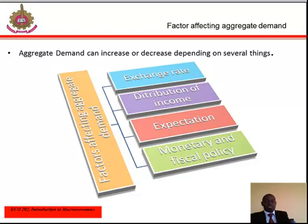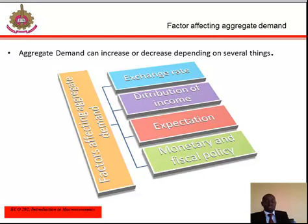Another factor is expectations. Consumers tend to have certain expectations about the future of the economy and adjust their spending accordingly. Another factor is monetary and fiscal policy. The government has some ability to impact aggregate demand — they can spend money or increase taxes in order to influence how consumers spend or save. An expansionary fiscal policy causes aggregate demand to increase, while a contractionary monetary policy causes demand to decrease.